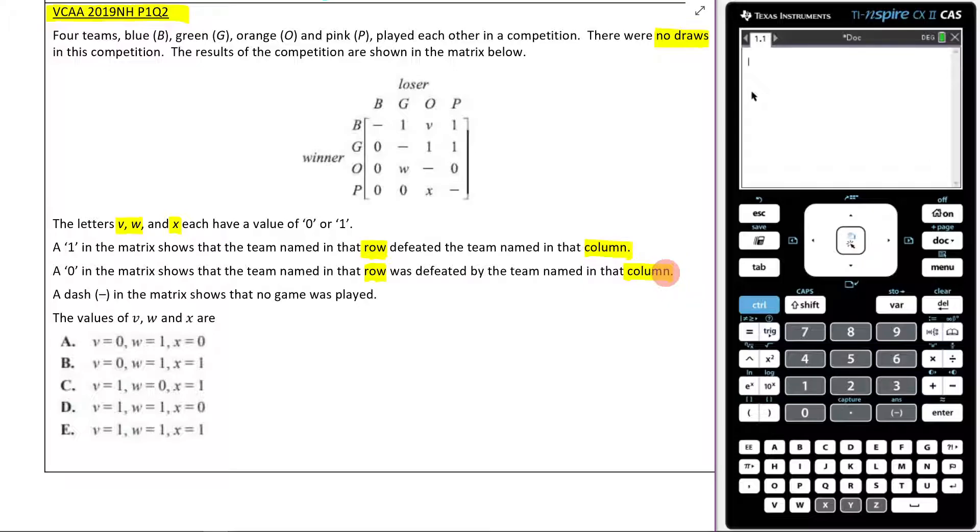So if we just try to read this for a second, this is saying that B obviously didn't play against itself. So we put a dash there. B beat G. We don't know what happened here. B beat P. G lost to B. G didn't play against itself, but then G beat O and P. That's kind of how we read it off. So this is my winners in the rows and my losers in the column.